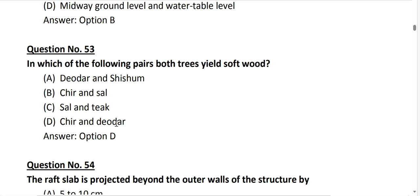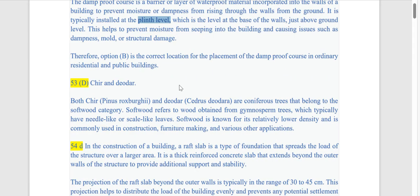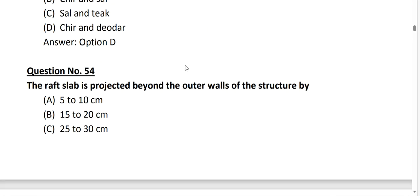It is typically installed at the plinth level, which is the level of the base of the wall just above the ground level. This helps to prevent moisture from seeping into the building and causing issues such as dampness, mold or structural damage. So option B is correct. Next question number 53. In which of the following pairs both trees yield softwood? The correct answer is option D, Cedar or Deodar.